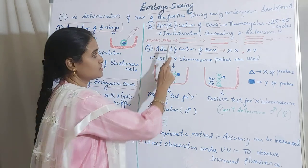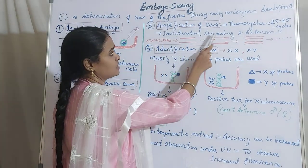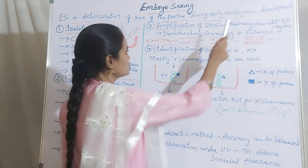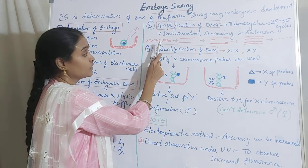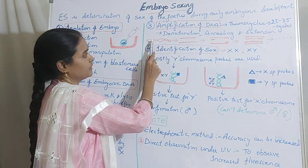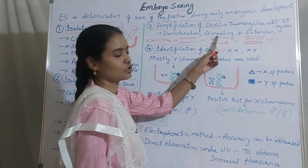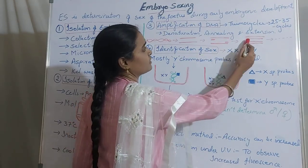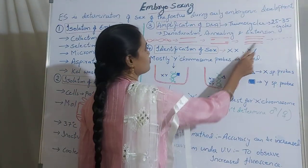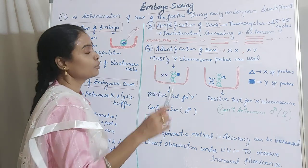The first step is denaturation, then annealing and extension. One cycle consists of these three steps. Denaturation means the isolated DNA will be heat-treated in order to denature — that is, separation of the two strands — so double-stranded DNA is denatured to obtain single-stranded DNA. Then it is annealing of the primers, followed by extension of the forward and reverse primers in order to obtain four copies. From two you obtain four copies. This one cycle is repeated for 25 to 35 cycles in order to obtain more copies of DNA — that is amplification.